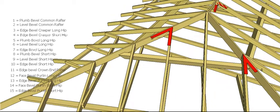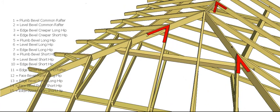Similarly, over on the other side on the short hip, these all have to be cut at bevel 4, or the edge bevel creeper for the short hip, so that they fit into the short hip.